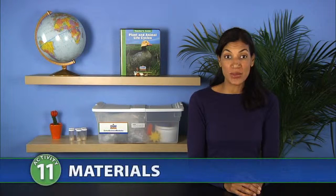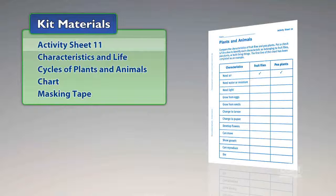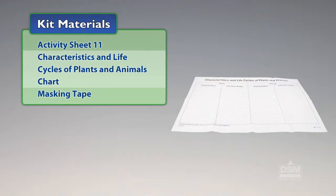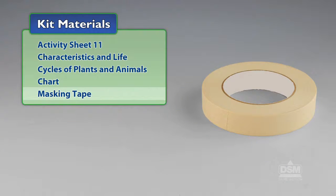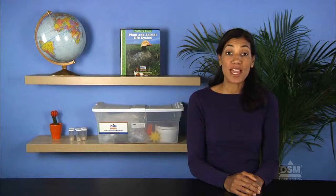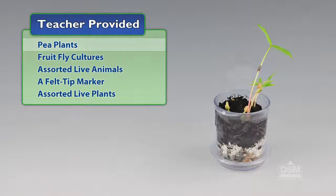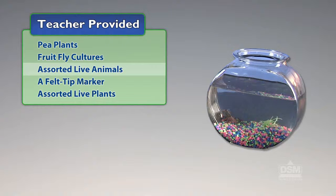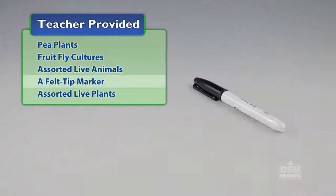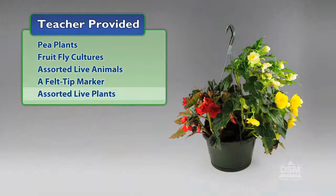You will need the following materials from the kit: Activity Sheet 11, Characteristics and Life Cycles of Plants and Animals chart, and masking tape. You will also need to provide pea plants, fruit fly cultures, assorted live animals, a felt tip marker, and assorted live plants.